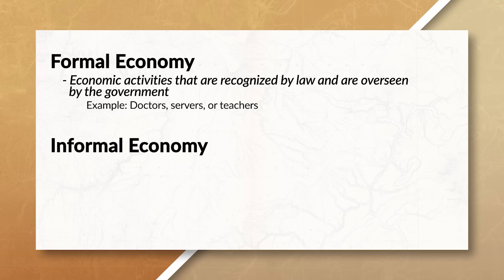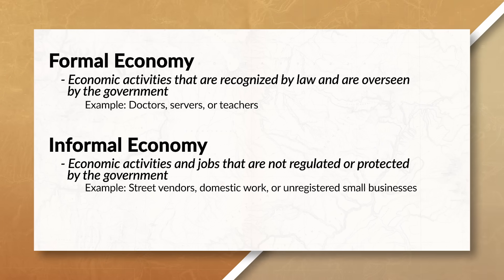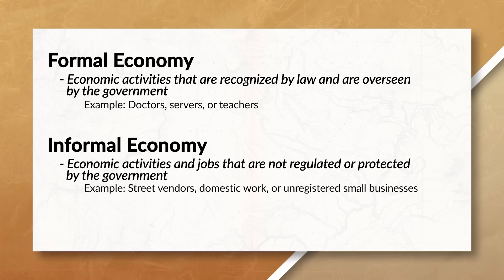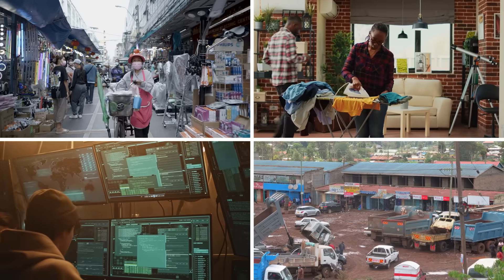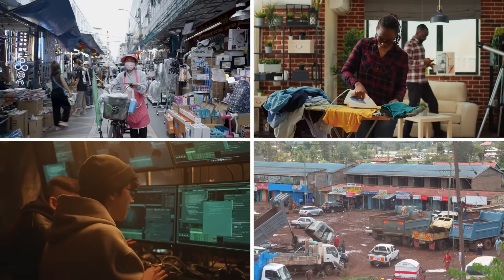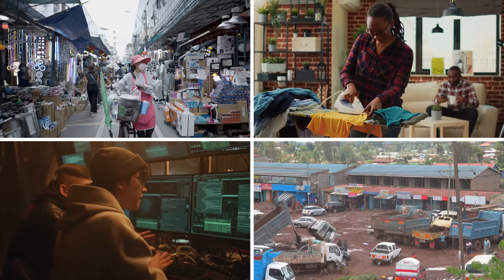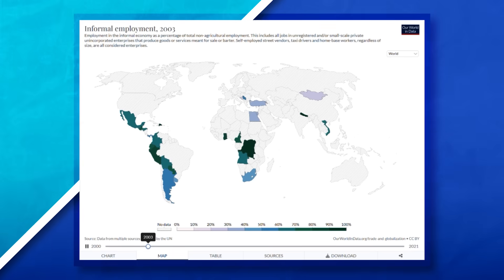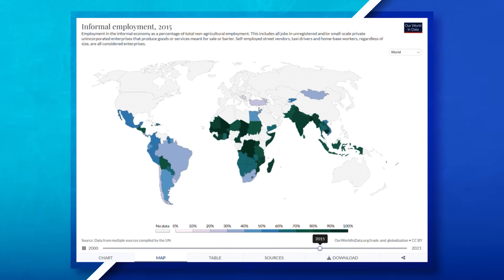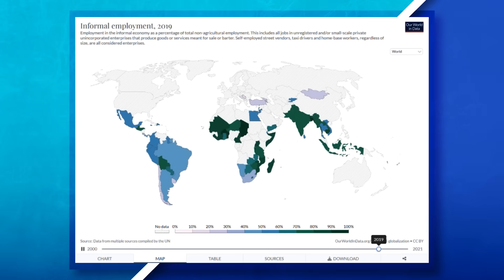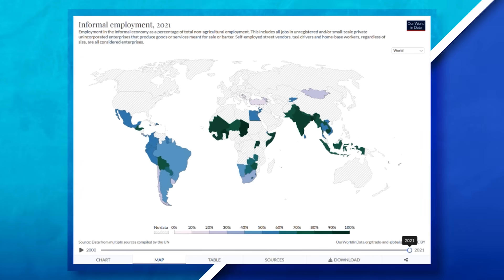On the other hand, the informal economy consists of economic activities and jobs that are not regulated or protected by the government. Jobs and activities in the informal economy often do not have access to formal financial services. They lack consistent income and often do not have regulations or legal protection. Jobs such as street vendors, domestic work, illegal businesses, or unregistered small businesses would all be examples. Traditionally, countries that have less economic development generally have a significant amount of jobs located in the informal economy instead of the formal economy.